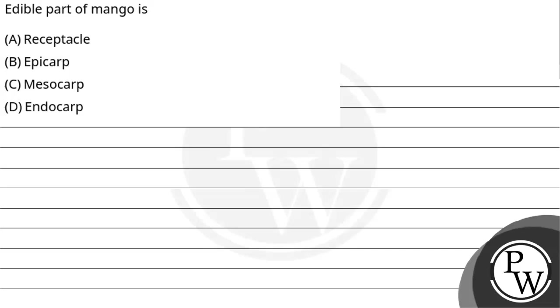Hello, let's see this question. The question over here says: edible part of mango is — option A: receptacle, option B: epicarp, option C: mesocarp, and option D: endocarp.